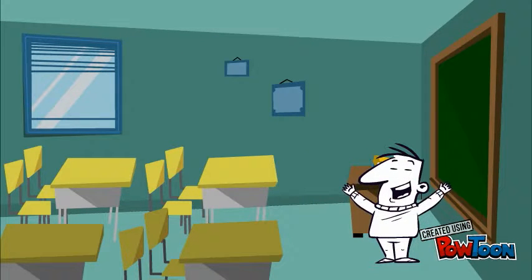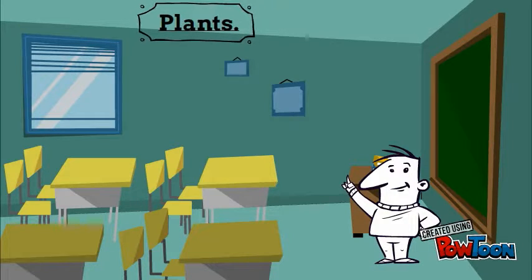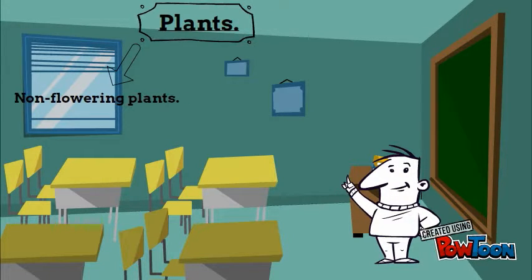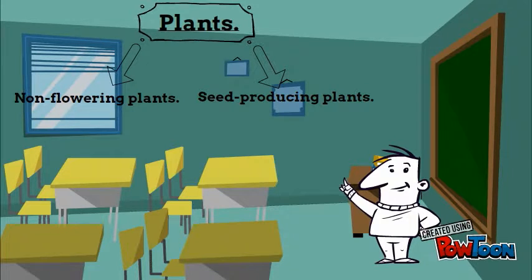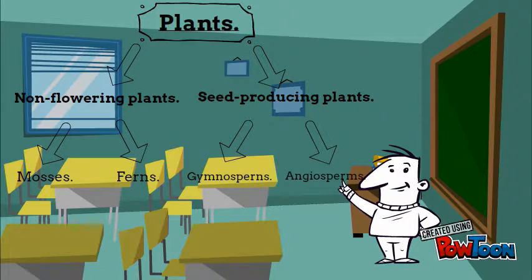But no problem, students. Here you are an outline. Plants can be non-flowering plants or seed-producing plants. Non-flowering plants are mosses and ferns, and seed-producing plants are gymnosperms and angiosperms.